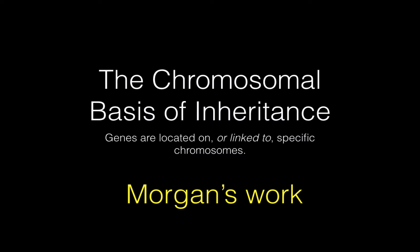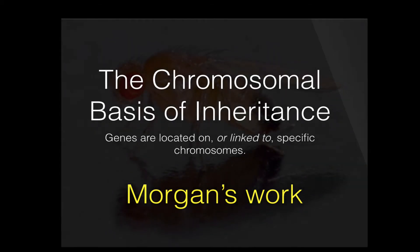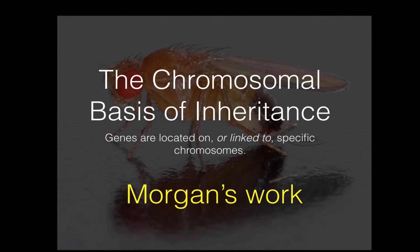Hello, this is Ed Chapman, and this videocast is going to explore the chromosomal basis of inheritance, which is going to focus mainly on the work of Thomas Hunt Morgan, who was the first scientist to link a specific gene to a specific chromosome. And to do so, he used a model organism called Drosophila melanogaster, or the common fruit fly.